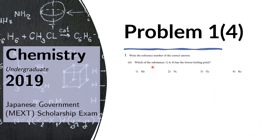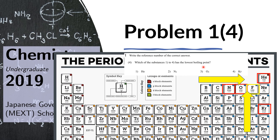Problem 1.4: Which of the substances 1 to 4 has the lowest boiling point? We recall that boiling point is related to the electronegativity of an element. Electronegativity increases from left to right and from bottom to top, excluding the noble gases, since they don't really interact with other elements. The lowest boiling point corresponds to the element with the least intermolecular interaction, so the answer should be a noble gas.